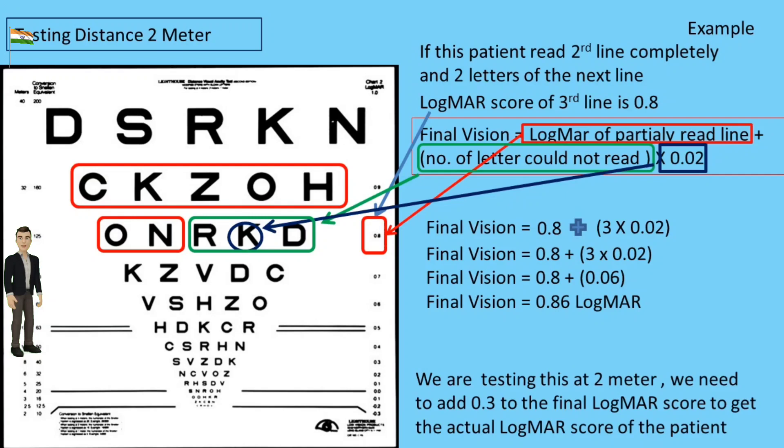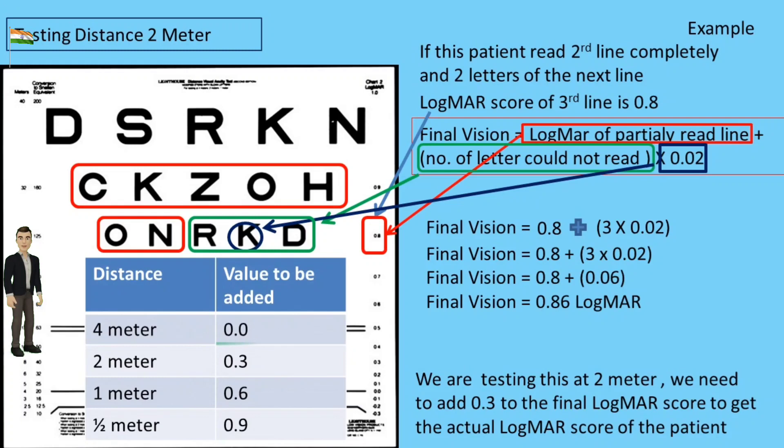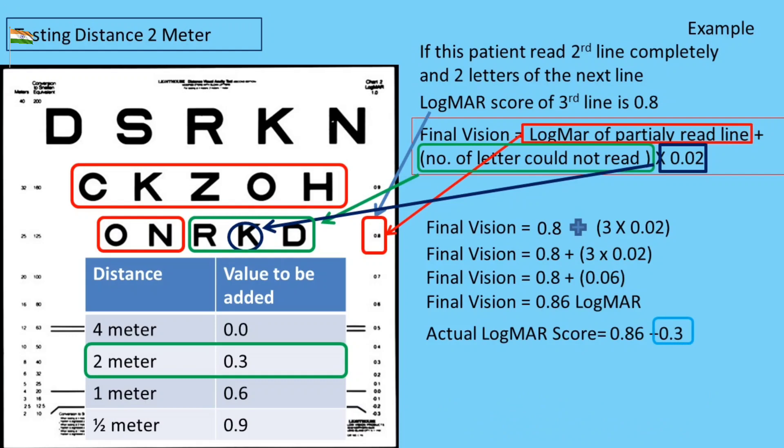We are testing this at 2 meters. We need to add 0.3 to the final LogMAR score to get the actual LogMAR score of the patient. Actual LogMAR score equals 0.86 plus 0.3 equals 0.89 LogMAR.